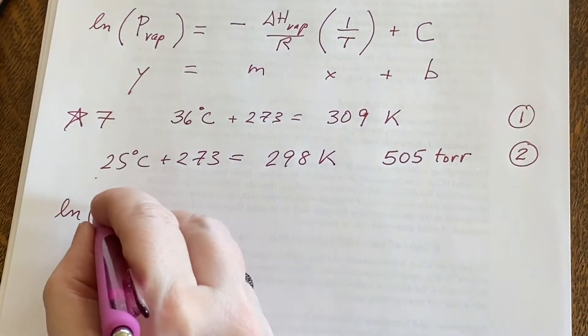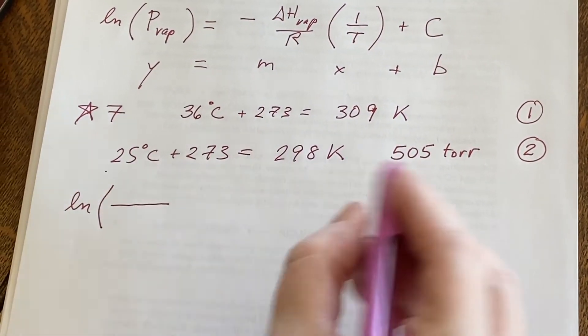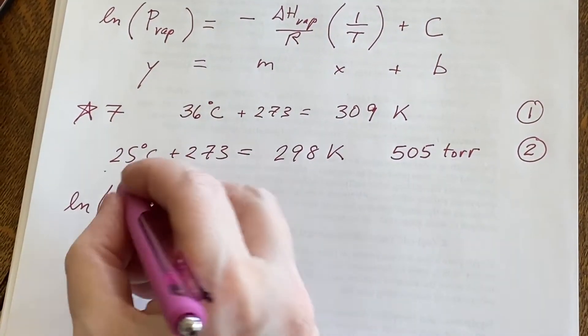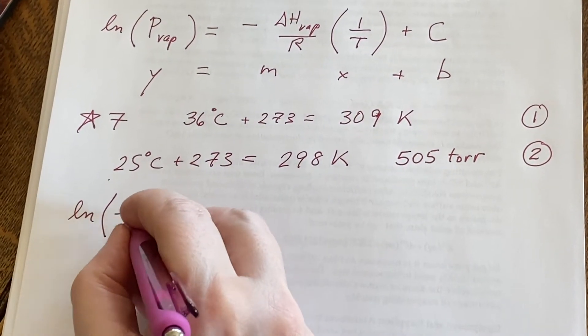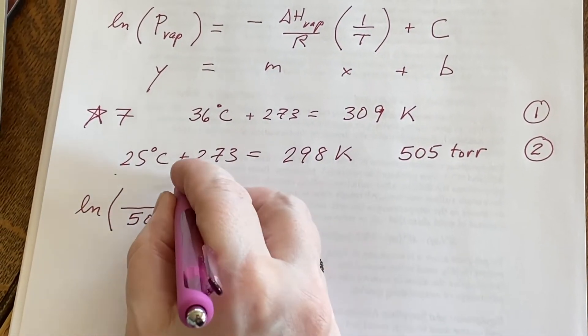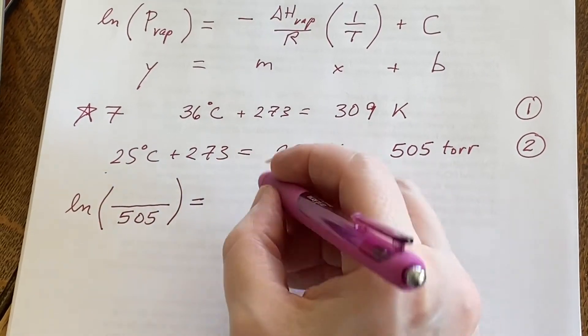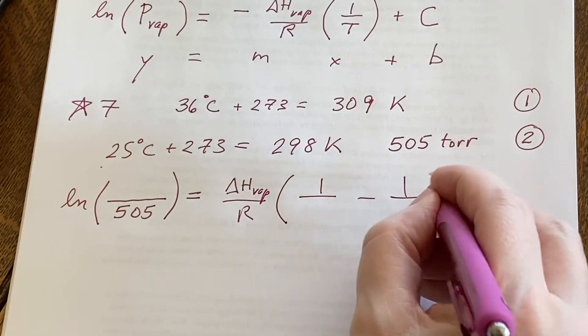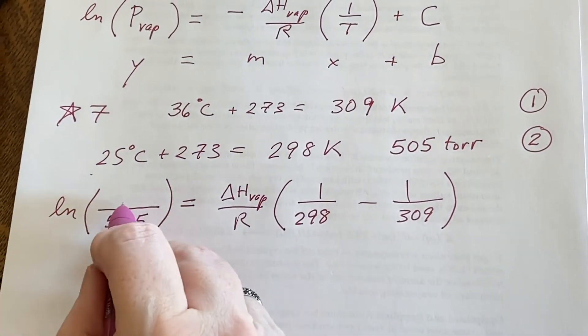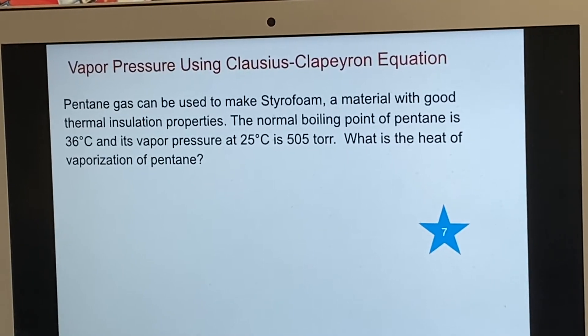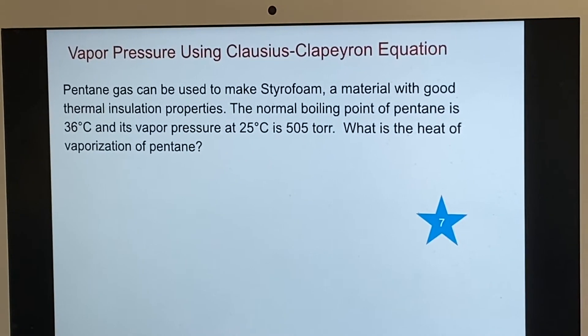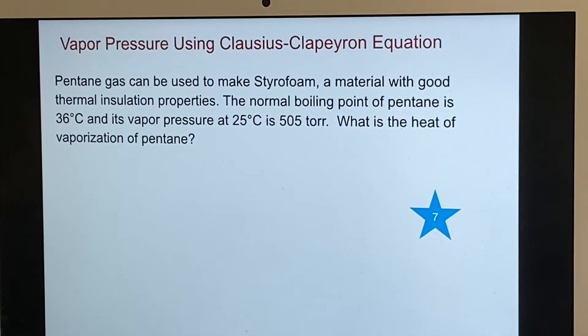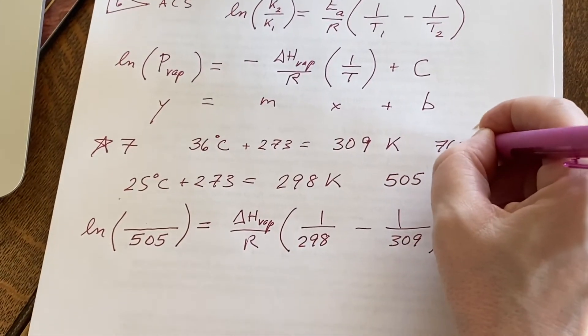If this is case two, then it says I should put this down here. And then I would be saying delta H vaporization over R, one over and one over. What's supposed to go here? The boiling point happens when the pressure is the same as normal atmospheric pressure. So this should be 760 Torr. I'll put the 760 here.